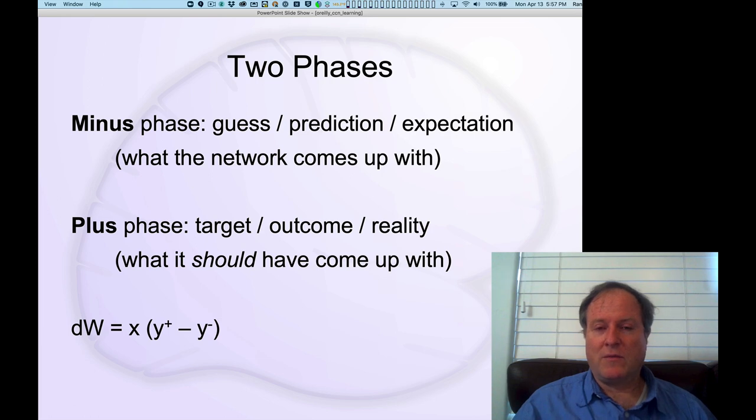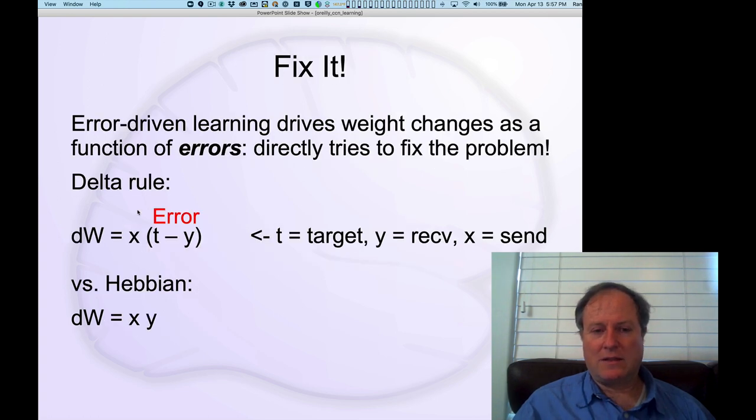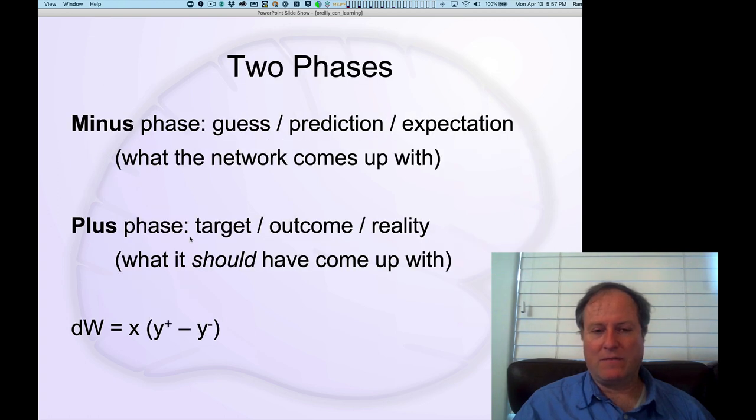We'll introduce some additional terminology to refer to these two aspects of error-driven learning. This comes from the Boltzmann machine originally. The minus phase refers to the guess, prediction, or expectation - what the network comes up with on its own. In the previous diagram, that's the y value, the activity of the receiving unit. The plus phase is the target outcome or reality, the thing the network should have come up with, the training signal we want the network to produce. We can write the same weight change equation as the sending activity times the receiving activity in the plus phase (the target correct answer) minus the activity in the minus phase.